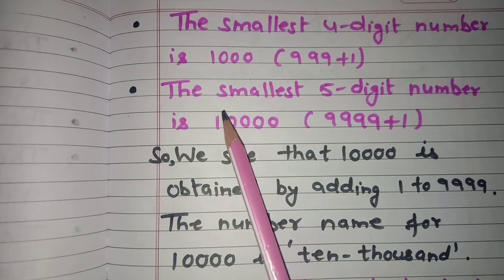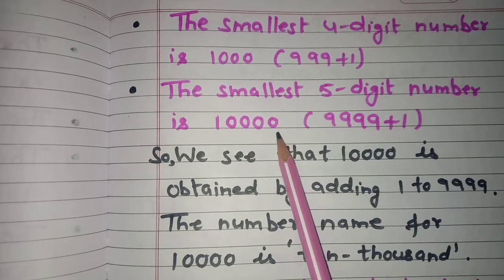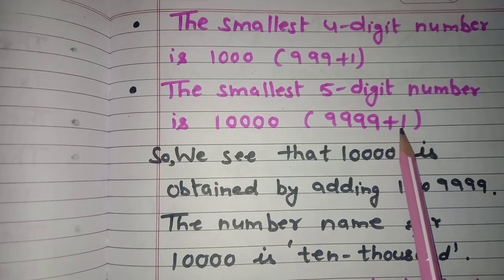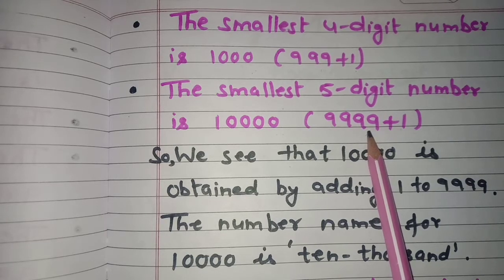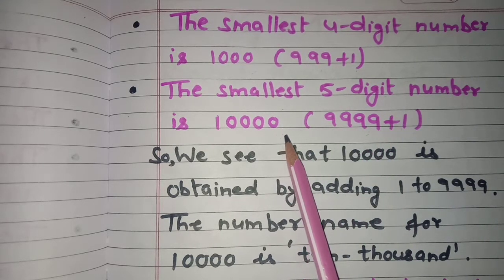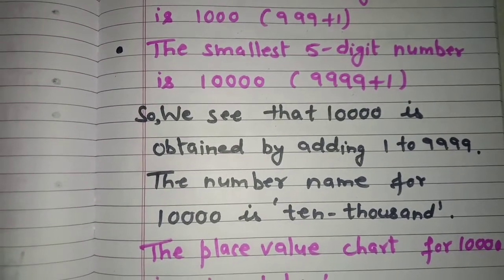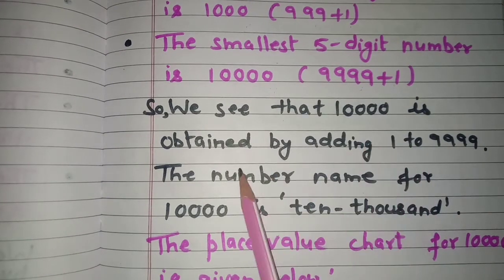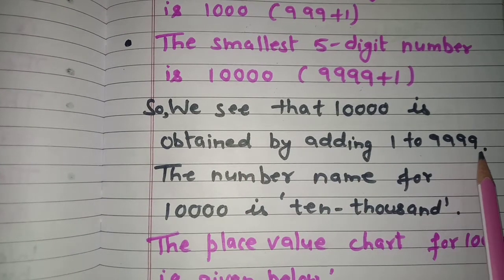Similarly, the smallest five digit number is 10,000, because we have to add one to 9999, which is the greatest four digit number, and then we get 10,000. So we see that 10,000 is obtained by adding one to 9,999.